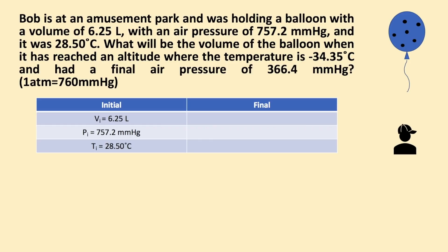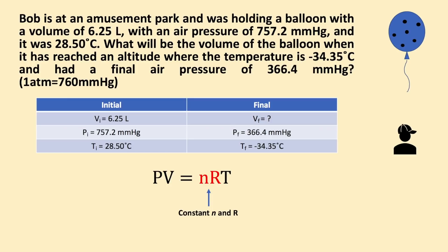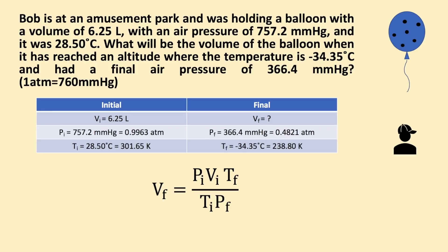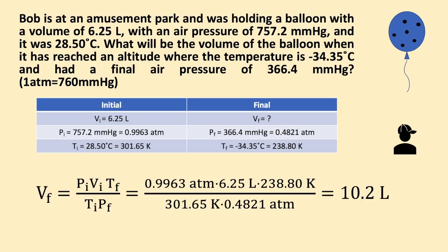Try to determine the appropriate expression to use from the ideal gas law. The balloon has an initial volume of 6.25 liters, initial pressure of 757.2 millimeters of mercury, and a temperature of 28.50 degrees Celsius, and a final temperature of negative 34.35 degrees Celsius and a final pressure of 366.4 millimeters of mercury. We know that R and the number of moles are being held constant, so we can set the ideal gas expression equal to these variables. Once we do that, we have the following expressions, which we can rearrange and solve for the final volume. However, before we can do this, we need to first convert temperature to Kelvin and pressure to atmospheres. Once we do this, we can solve and we get a final volume of 10.2 liters.